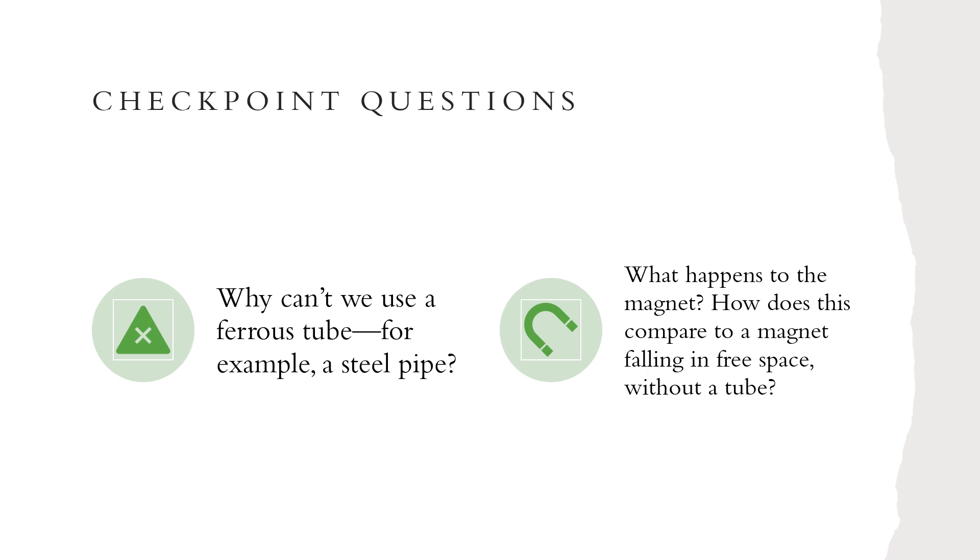Checkpoint questions. Why can't we use a ferrous tube, for example, a steel pipe? This pipe would have iron in it which has magnetic properties. It could have produced a magnetic field that would have skewed our data.